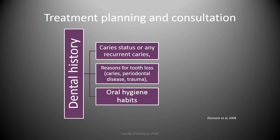A thorough dental history should also be obtained, including caries status or any recurrent caries, reasons for tooth loss such as caries, periodontal disease, or trauma, oral hygiene habits, and previous dental treatments such as periodontal treatments, root canal treatments, and past or existing prostheses. Recurrent caries indicates a high caries risk and may indicate whether to maintain or replace a questionable abutting tooth. A person with a history of periodontal disease might be at higher risk to develop peri-implantitis and late implant failure.